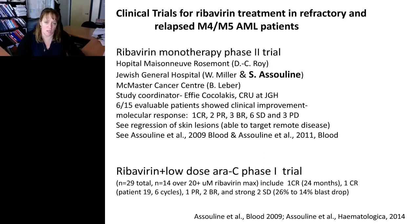We carried out a phase 2 clinical trial in refractory and relapsed M4 and M5 AML patients. This was a multi-center effort including Hôpital Maisonneuve-Rosemont, the Jewish General Hospital, with Sarit Assaline as lead coordinator, and Brian Leber at McMaster. Out of our 15 invaluable patients, we had six with responses: one complete remission lasting nine months, two partial remissions, three blast responses (≥50% reduction in leukemia blasts), six stable diseases, and three patients who never responded.